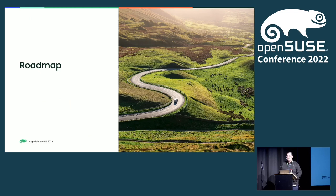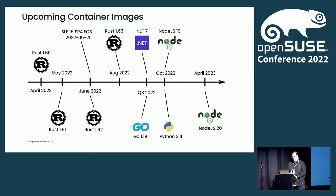Coming to our roadmap — which container updates can you expect? We are looking to include Rust 1.61, 1.62, and 1.63, a newer version of .NET, newer Go, Node.js 19, Python 3.11, and so on. We are extending the language stack accordingly and by requirement.